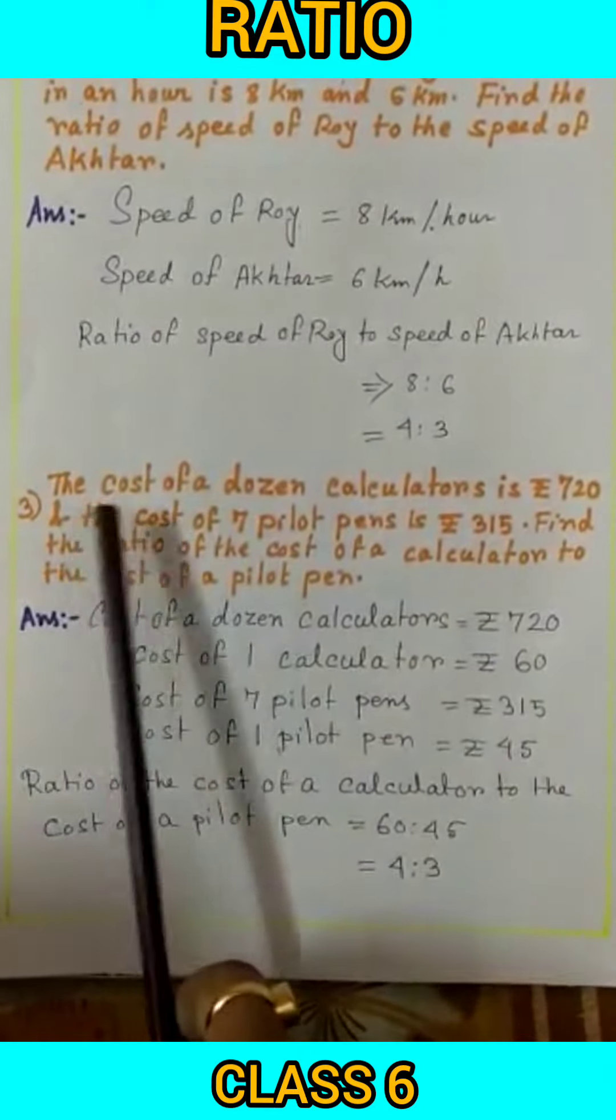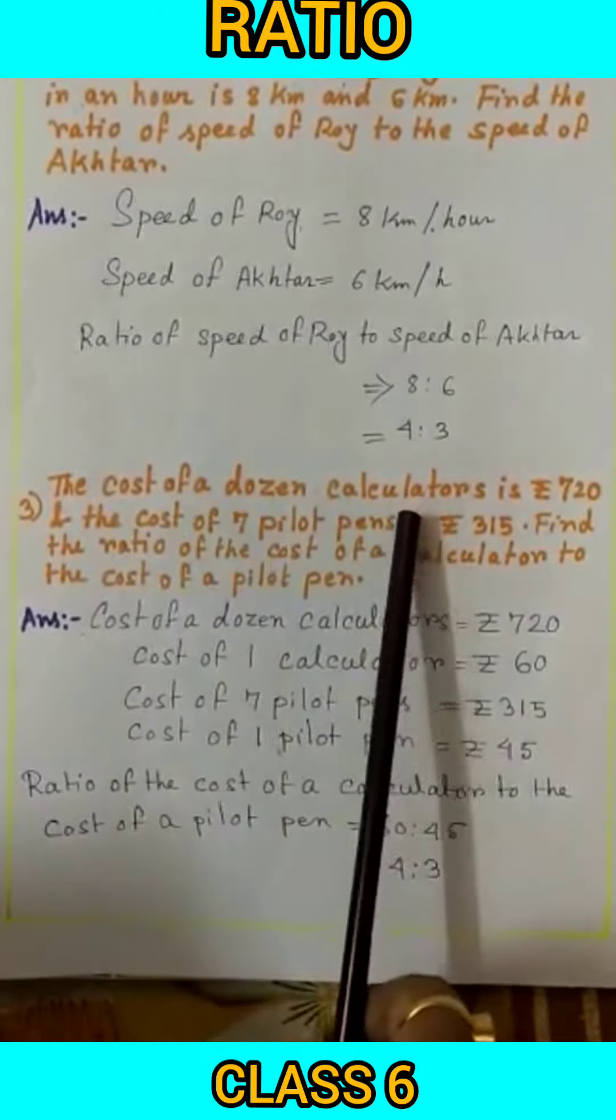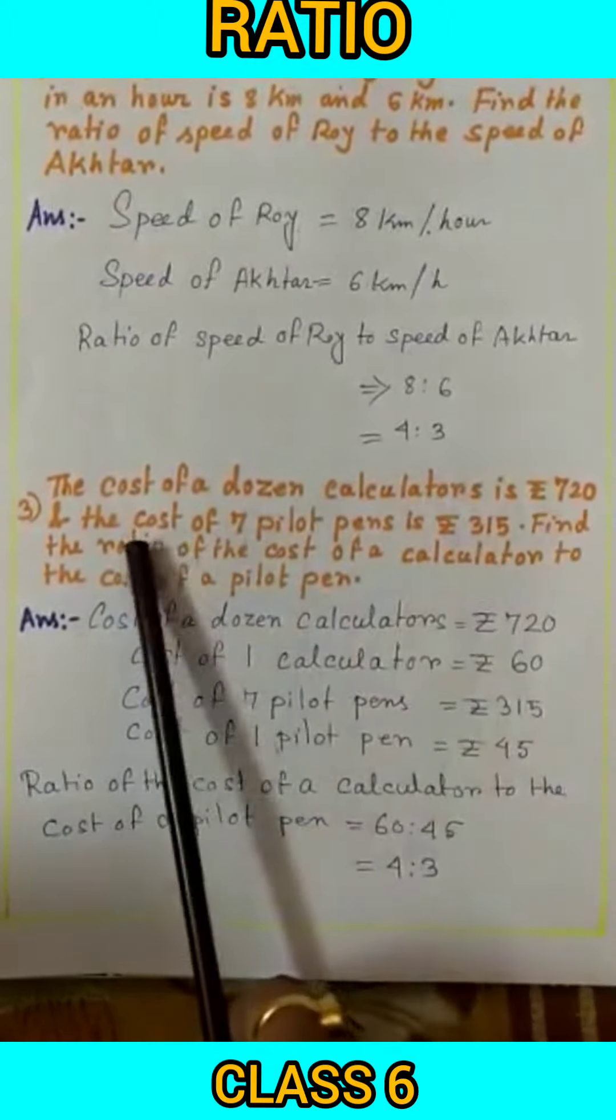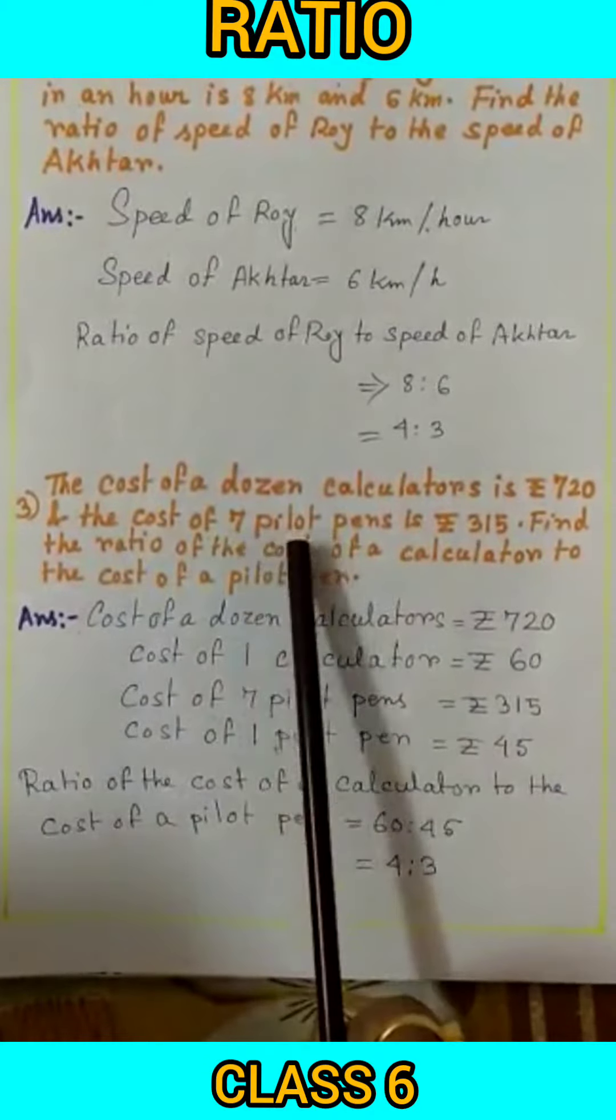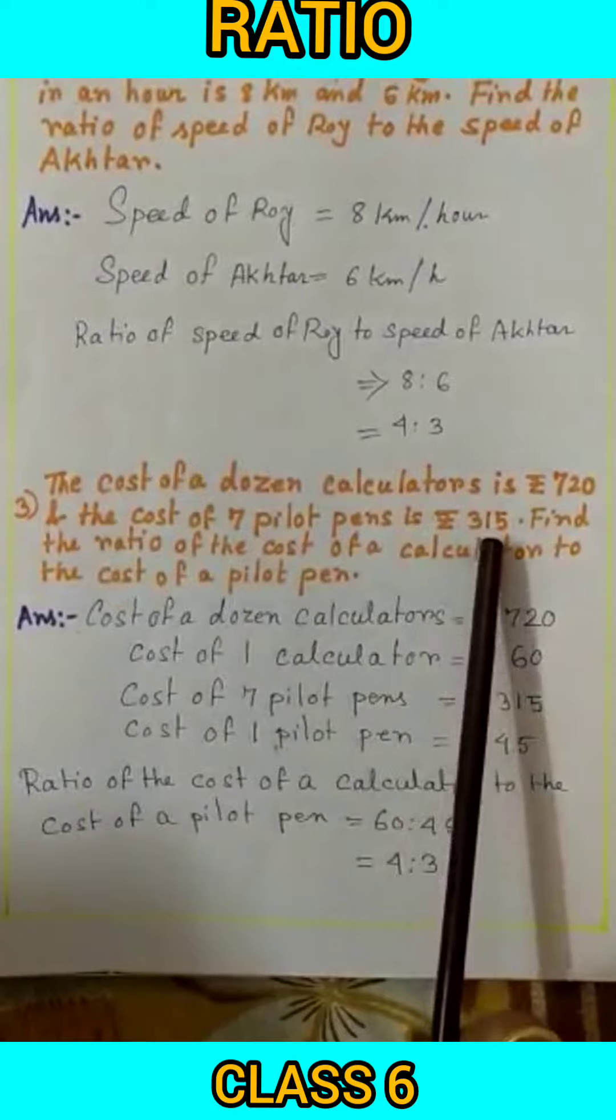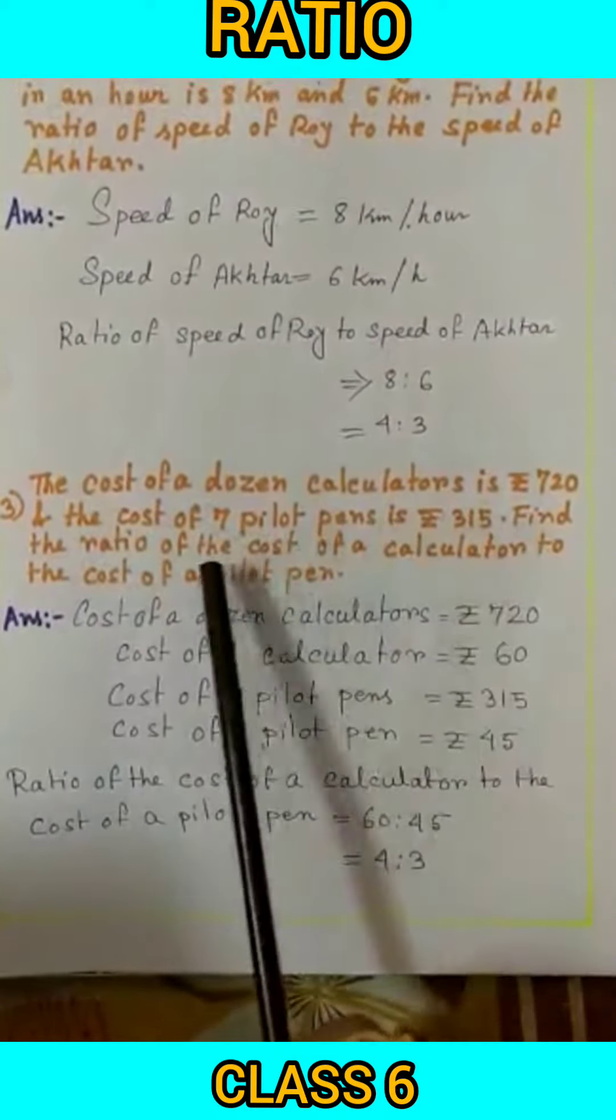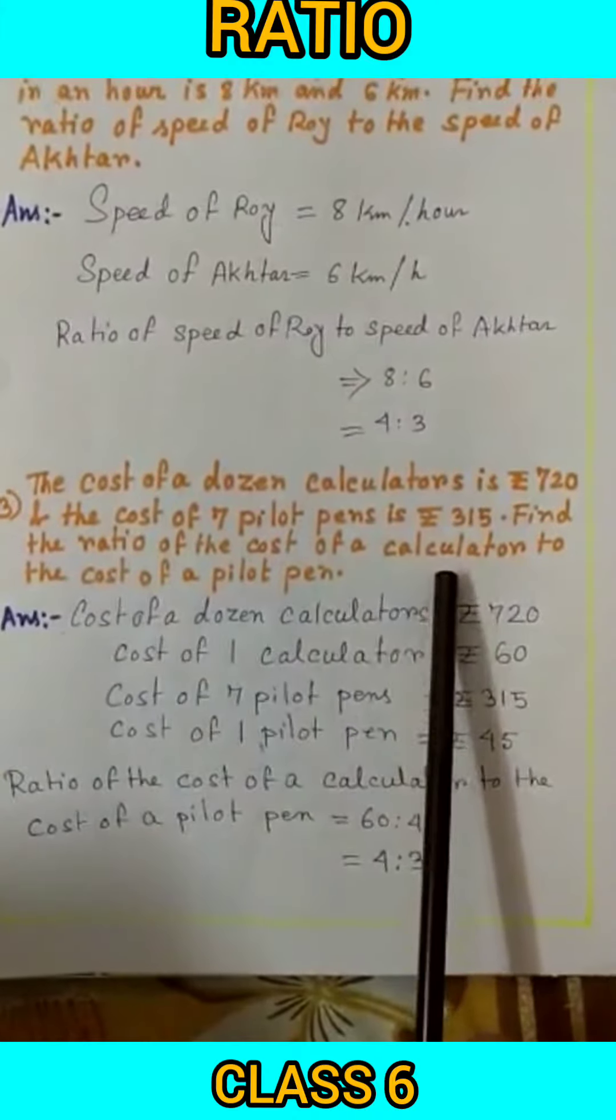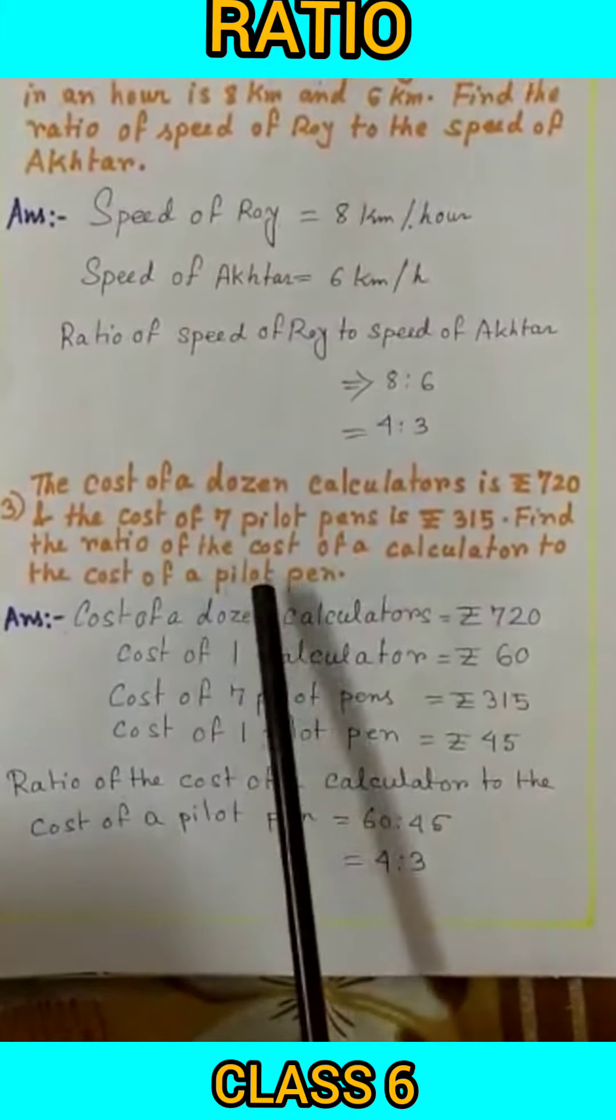And next question: the cost of a dozen calculators is Rs. 720 and the cost of 7 pilot pens is Rs. 350. So find the ratio of the cost of a calculator to the cost of a pilot pen.